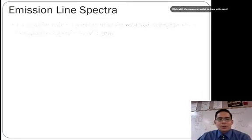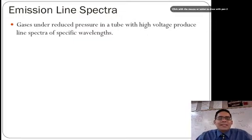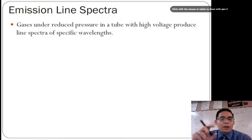So what is an emission line spectra? Gases under reduced pressure in a tube with high voltage produce line spectra with specific wavelengths. So if you had a gas tube and you lit it up by putting a high voltage, you would actually see light being created, and that's actually what happens in the fluorescent light bulbs above me. And when we analyze those, you actually get these bright line spectra.